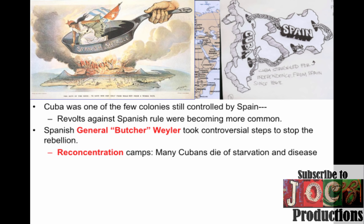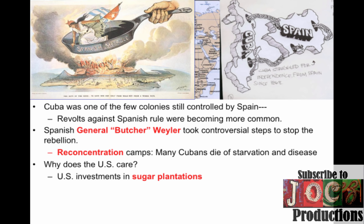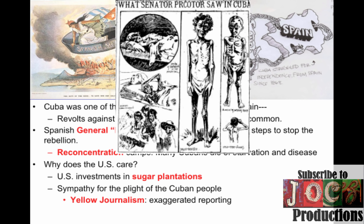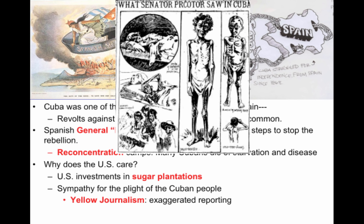You're probably wondering why the United States cared. Well, the U.S. had a large amount of investments, especially in the sugar plantation industry, and there was sympathy among the American public for the plight of the Cuban people. Really driving that sympathy was the rise of yellow journalism in the 1890s. Yellow journalism was practiced by people like William Randolph Hearst and Joseph Pulitzer — it was exaggerated, sensationalistic reporting to attract readers, exaggerating what was happening in Cuba.